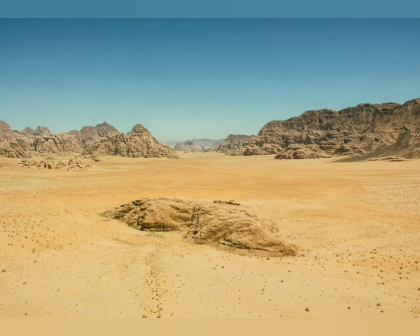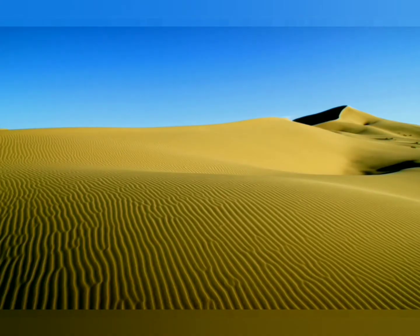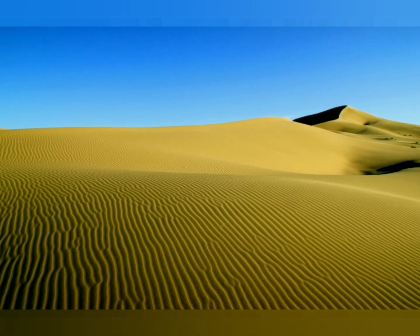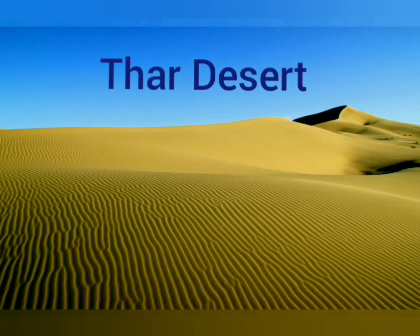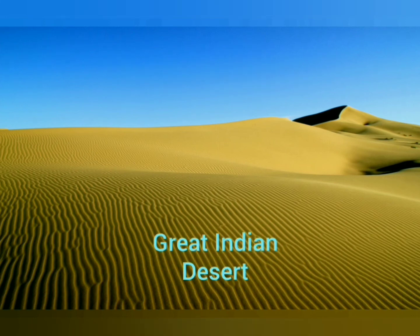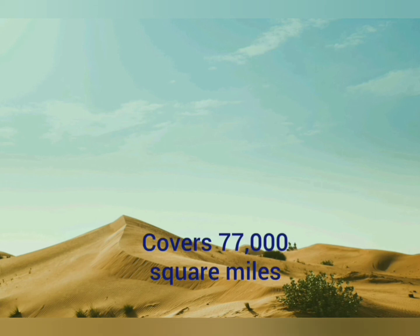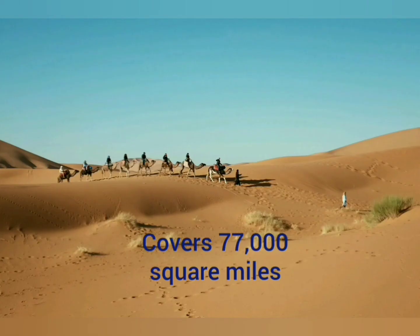Kyzylkum Desert — This is the world's 11th largest desert. It covers parts of Kazakhstan, Turkmenistan, and Uzbekistan. It covers 1,15,000 square miles. Thar Desert, also known as the Great Indian Desert, is the world's 17th largest desert. It forms a natural boundary between India and Pakistan, and it covers 77,000 square miles.